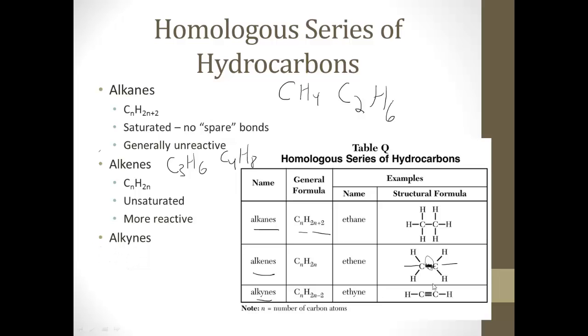Finally, alkynes, right? Here there's going to be a triple bond involved, and the general formula is CnH2n-2. So if it was C4, it would be 2n-2 for the H, so it would be C4H6, C5H8, et cetera, et cetera. All right, these are also unsaturated, and they're going to be even more reactive than the alkenes.